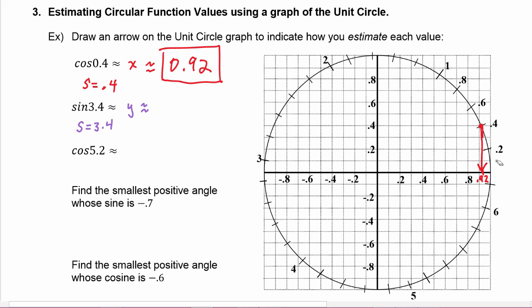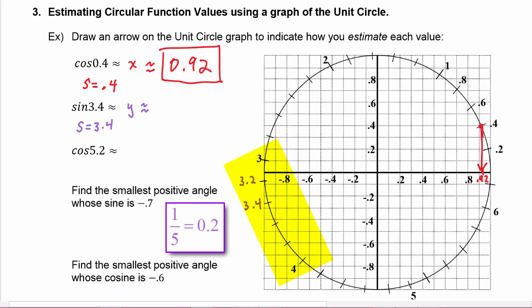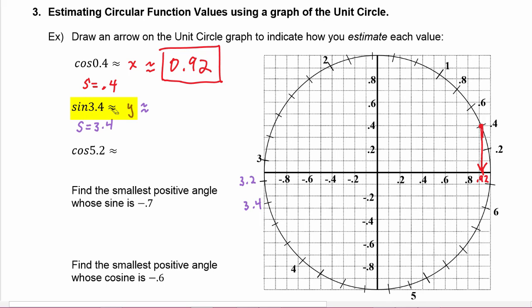We notice that the marks from 3 to 4 — there are five marks — which means each mark is 0.2. So if this is three, then this is going to be 3.2, and this would be 3.4. At s equals 3.4 we have to find the sine of 3.4, which means get the y-value.